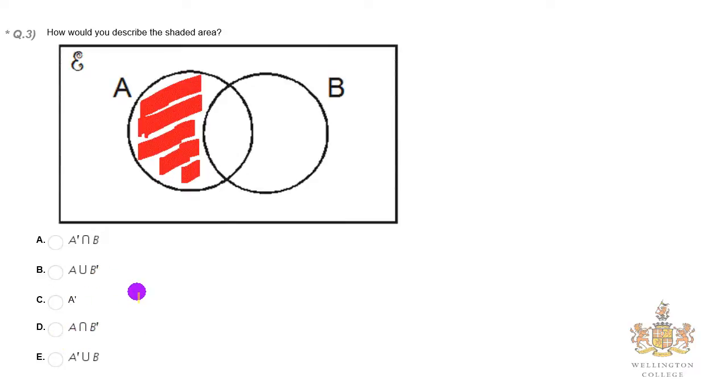A intersect NOT B. Well, there's A here. And if we intersect that with NOT B, now NOT B is everything that's outside of B. So if we were to shade NOT B, it would be this blue area here.